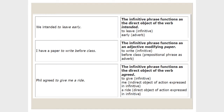In number three: 'Phil agreed to give me a right.' The infinitive phrase functions as the direct object of the verb 'agreed.' 'To give' is the infinitive, 'me' is the indirect object, and 'a right' is the direct object of the action expressed in the infinitive. It's kind of tricky, but we can do it.